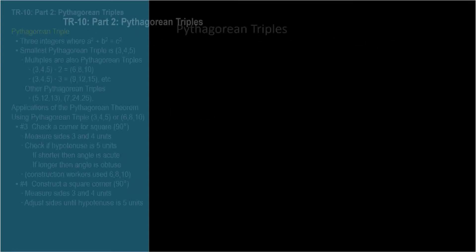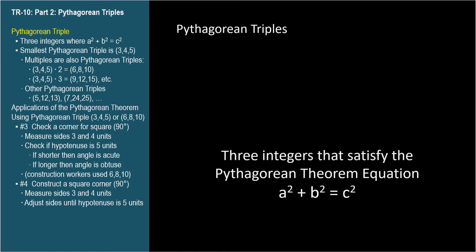A Pythagorean triple is a set of three positive integers that satisfy the Pythagorean theorem equation a squared plus b squared equals c squared.